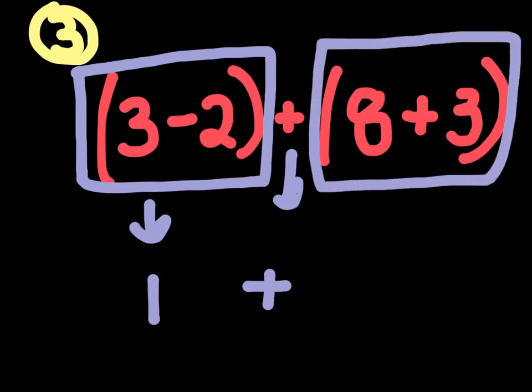Then we would do what the second set of parentheses has. Meaning, 8 plus 3. 8 plus 3 is just 11. So we would bring down an 11. And we now have a simpler equation that we can solve. 1 plus 11. And 1 plus 11 is just 12.